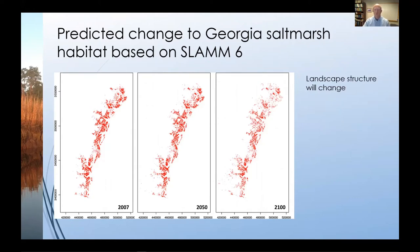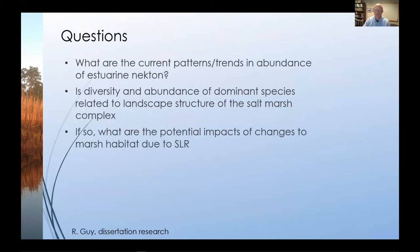We're interested in changes particularly due to both natural and anthropogenic stressors. This image shows predicted changes using the sea level affecting marshes model version 6 based on a 1 meter sea level rise through 2100. Although there are certainly uncertainties in these models, it is nearly certain that landscape structure will change. For a portion of her dissertation work, Rachel Guy asked these fundamental questions: What are the current patterns and trends in abundance of estuarine nekton? Is that diversity and abundance of dominant species related to landscape structure of the salt marsh complex?